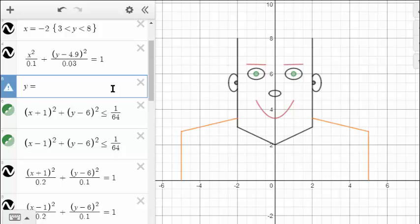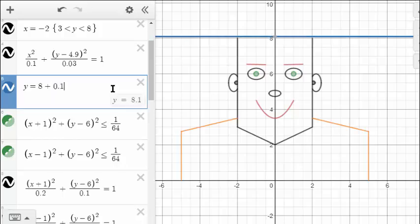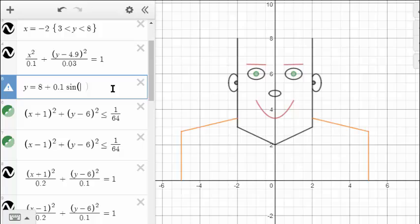And so what I came up with was this equation, which is going to be a sinusoid: 0.1 sine 8x. Now you can see that this function goes left forever and right forever. So I want to limit its domain. So I want this to go from negative two to two. And you can see that it does a really good job of doing that.